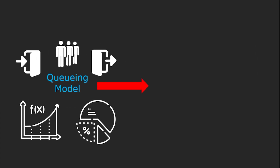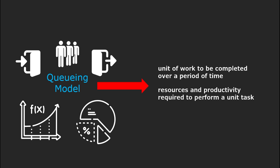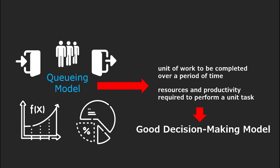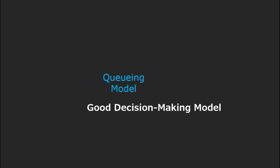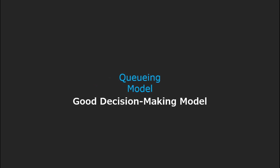In order to apply queuing models to the construction field, it is necessary to define the unit of work to be completed in a given period of time, and to define the resources and productivity required to perform unit tasks. In queuing models, various models can be applied considering the service capability of the server and the customer service request. These models can be used as a decision-making model through simplified expression of the production system and selection of the model concerning uncertainty.